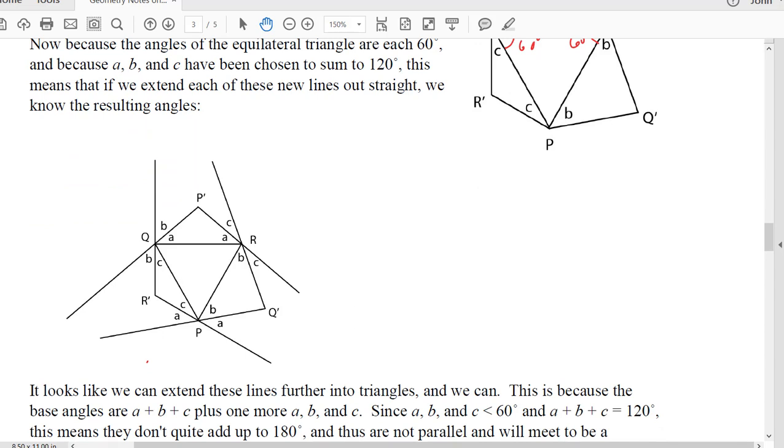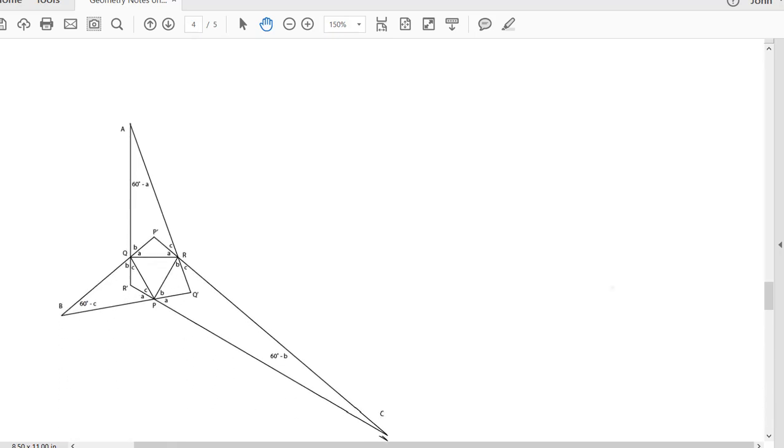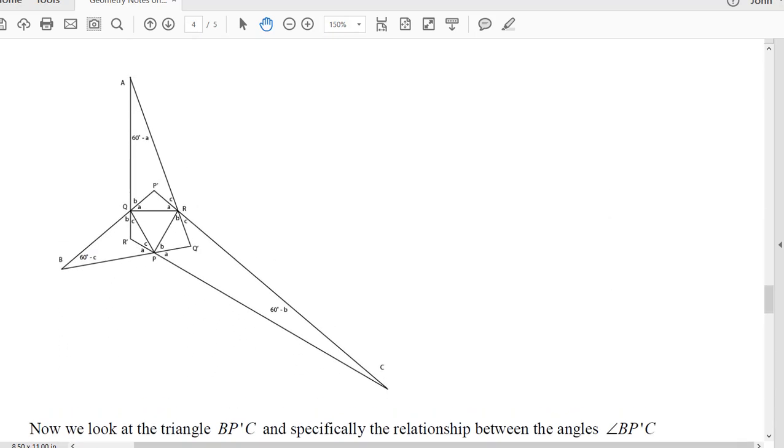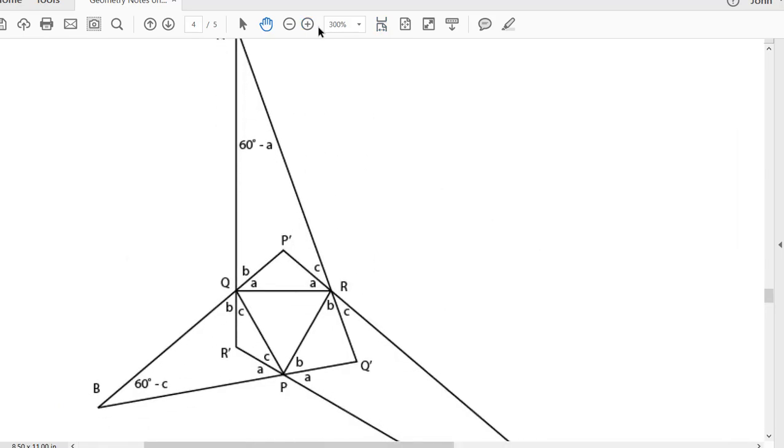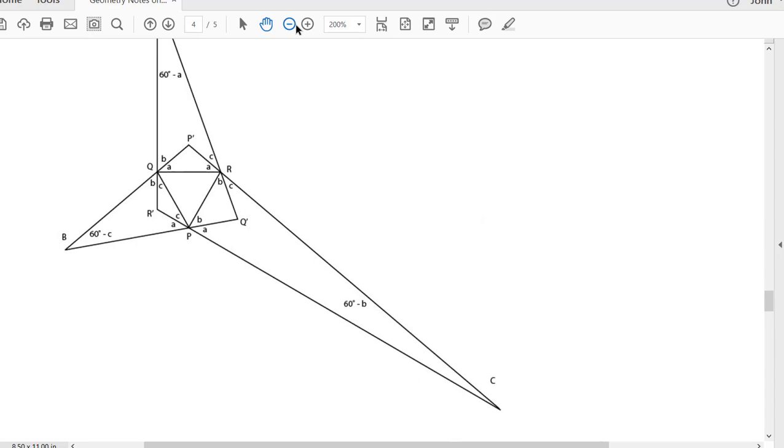Now, because A plus B plus C is 120 degrees and A is less than 60 degrees, that means that this angle plus this angle is less than 180 degrees, so these will eventually meet and they form these little triangles. Furthermore, we know that A plus B plus C is 120 degrees. So this A and whatever this angle is have to add up to the remaining 60. So if that's A, that's 60 minus A. And then similarly, this is 60 minus C, and this has to be 60 minus B.